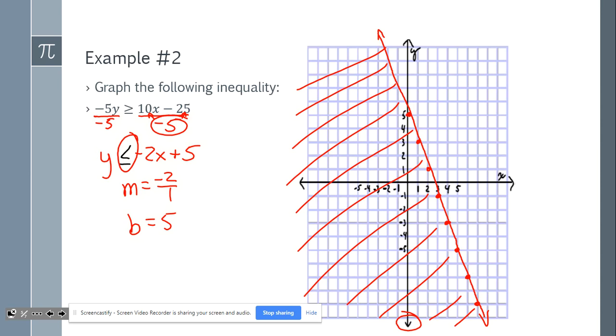And of course, writing our original function, which is negative 5y, is greater than or equal to 10x minus 25 on the graph.